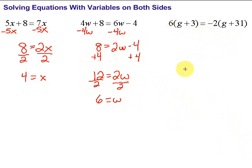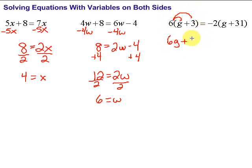Last one — we've got parentheses. When we see parentheses, remember the distributive property. Our first step is to distribute the numbers out front through the parentheses to get rid of them. We take our 6 and multiply it by g, and multiply it by 3: so we get 6g plus 18. Then we do the same with the negative 2: negative 2 times g is negative 2g, and negative 2 times positive 31 gives us minus 62.